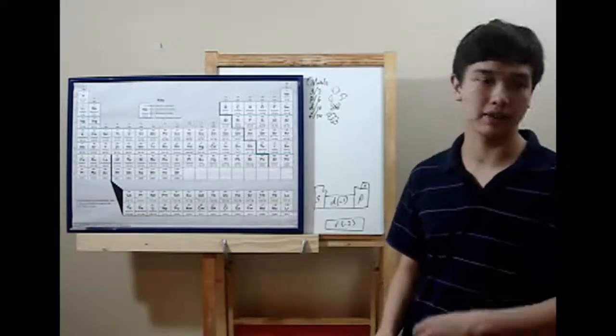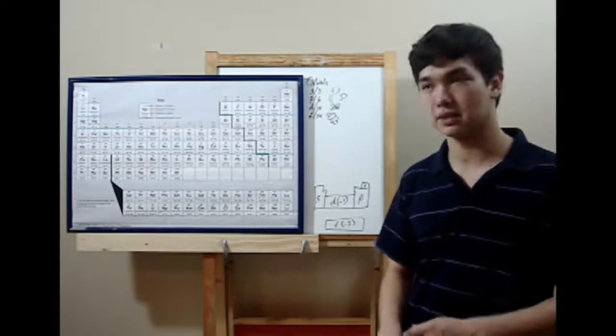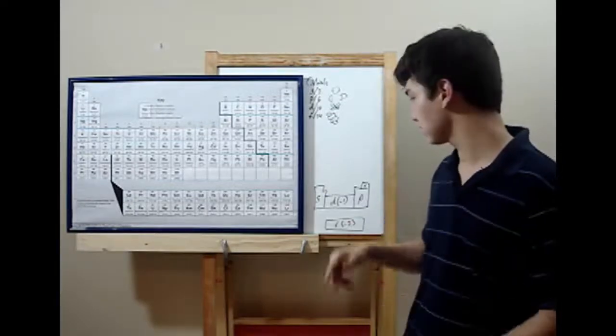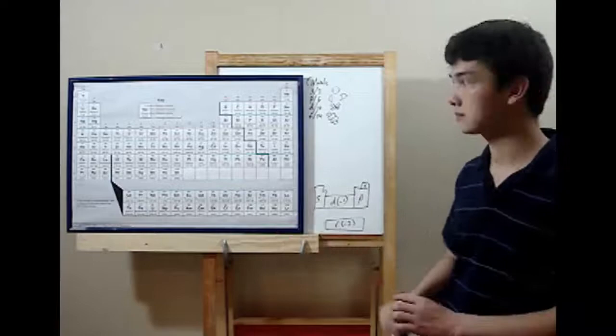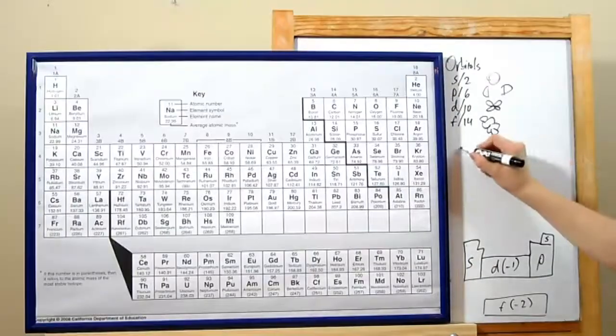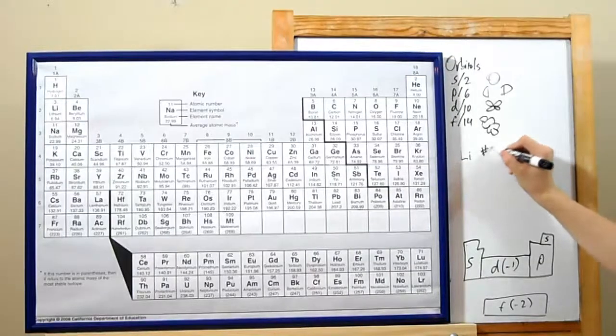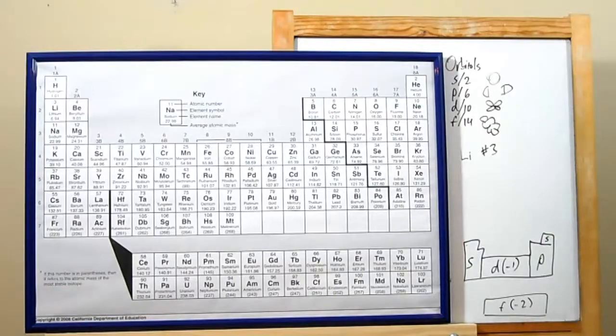Your teacher will sometimes need you to write out an electron configuration of an element, or, based on the electron configuration they've given you, identify the element. Let's run through a simple one first. Lithium, atomic number three.